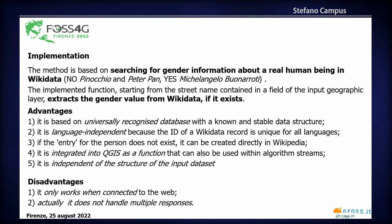The method is based on searching for gender information about a real human being in Wikidata — so no Pinocchio and no Peter Pan, but yes Michelangelo or Buonarroti. The implemented function, starting from the street name contained in a field of the input geographic layer, extracts the gender value from the Wikidata JSON if this entry exists.